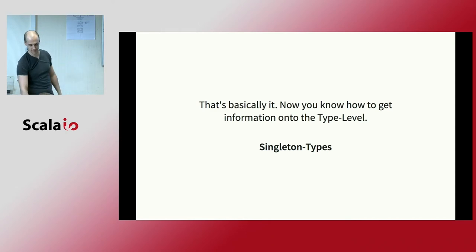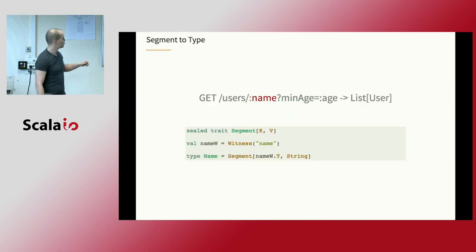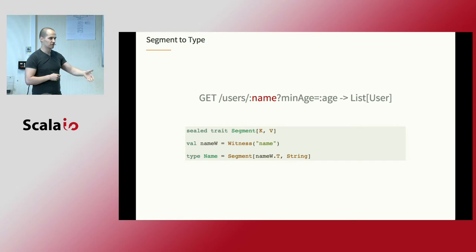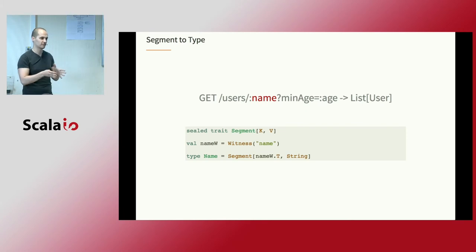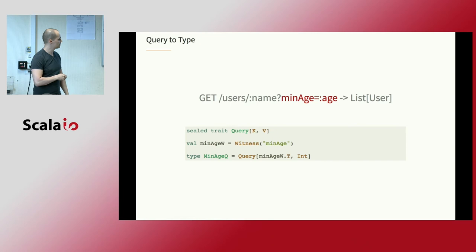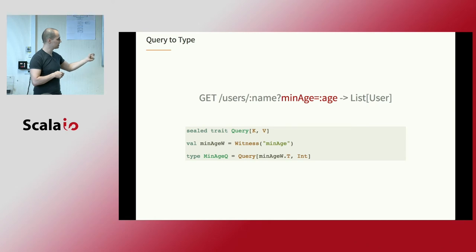When we continue, we have the Segment type — the dynamic part in our path. We create a new type Segment which has a key (the name of the segment) and a value (the expected input type). In this case we say it's a name, so we expect it to be a String. We derive a Witness to find the literal type for the segment name, and create the type representation: a Segment with key 'name' expecting a String as input. We do exactly the same thing for the Query type — we derive the literal type for the key 'min_age' and it expects an Integer as input.